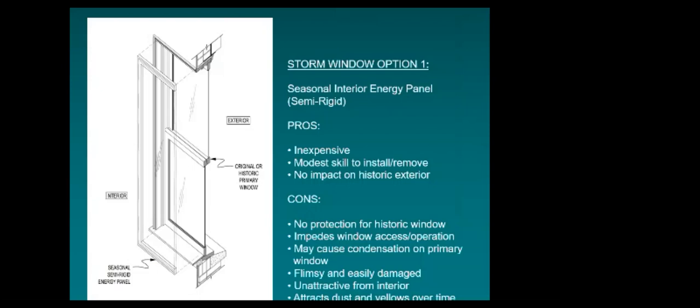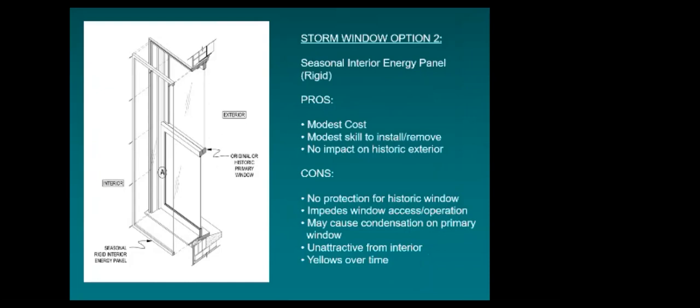Storm window option one is not much of a step above a home insulation window kit from a hardware store that you set up seasonally with a hair dryer. Option two is slightly higher quality — all interior, no exterior impact — and would resolve comfort or condensation issues at specific windows like the kitchen or bath. It's not a long-term solution since the interstitial space must be cleaned, but it costs much less than exterior storms.